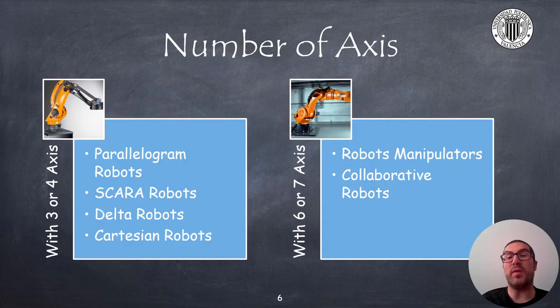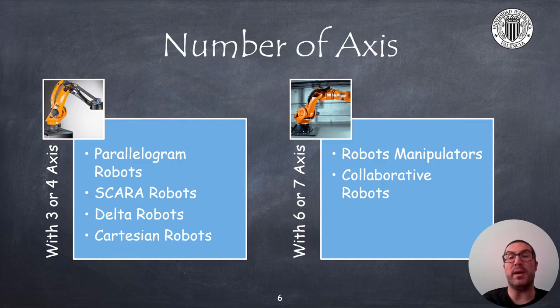The number of axes of a robot will mainly affect other criteria such as the work area and also the price. However, I think it's important to differentiate between robots that have three or four axes, such as parallelogram robots, SCARA, Delta robots, or Cartesian robots.